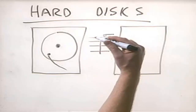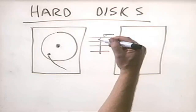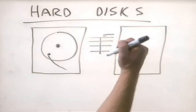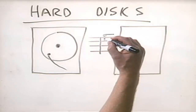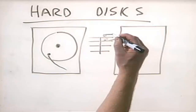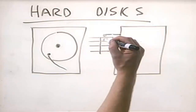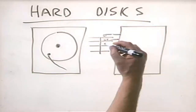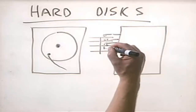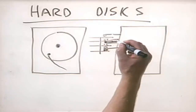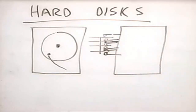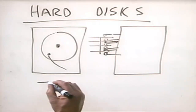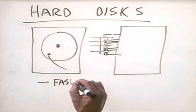Instead of a single platter like the floppy disk, a hard disk drive has multiple platters — for example, four in this system. Each of these platters is double-sided, meaning you can read and write data from the top and the bottom. Each platter has its own set of read/write heads, one on the top and one on the bottom, that read and write information from both sides of the disk.